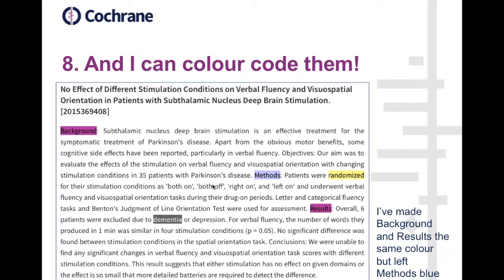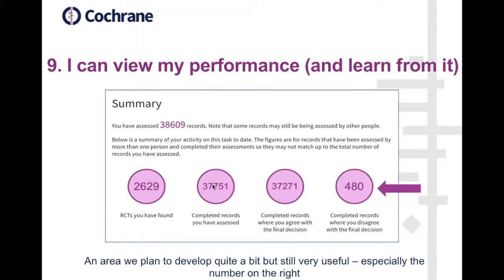Moving on to two really interesting features that help a contributor learn and improve, because they focus on the notion of feedback, which is really important. Under the 'My Statistics' tab in Cochrane Crowd, a contributor can see their metrics around the total number of records they've assessed — here it's approaching 39,000 assessments for this particular contributor. Perhaps more importantly, they can see the number of records where their decision disagreed with the final decision — you can see that number on the right: 480, which is somewhere between 1 to 2% disagreement — pretty good going.